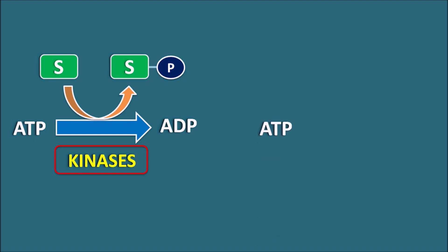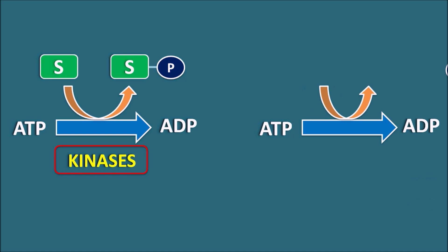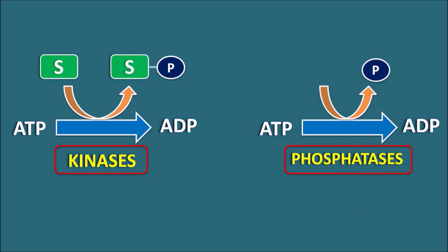Sometimes ATP is converted into ADP with release of inorganic phosphate, and these reactions can be mediated by phosphatases. Phosphatases can be involved in substrate phosphorylation as well as the release of inorganic phosphate. In this way, dephosphorylation reactions can be mediated by kinases and phosphatases.